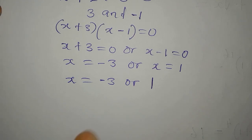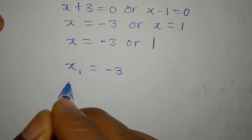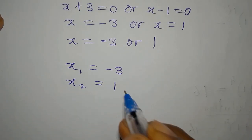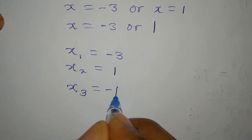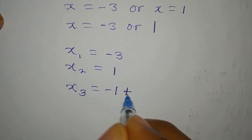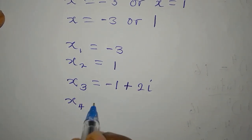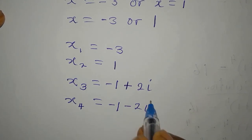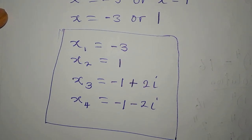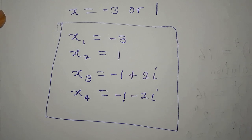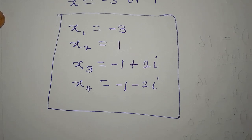Now let's bring all four solutions together. x₁ equals minus 3, x₂ equals 1, x₃ equals minus 1 plus 2i, and x₄ equals minus 1 minus 2i. These are the four solutions to the equation. Thank you for watching to the end — if you love this video, subscribe to my channel and share with your friends. Thank you for always supporting and watching.